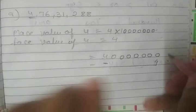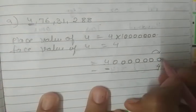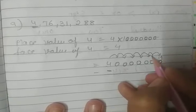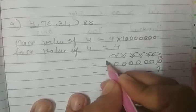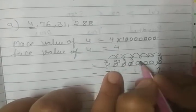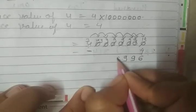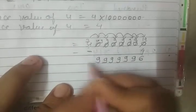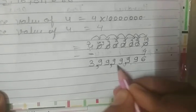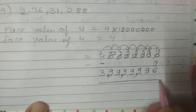The place value of 4 in 4 crore 76,31,288 is 4 multiplied by 1 crore, which equals 4 crore. The difference is 4 crore minus 4. Since 0 is less than 4, we take carry. We get 9, 9, 9, 9, 9, 9. Then 10 minus 4 is 6. So the answer is 3 crore 99,99,996.